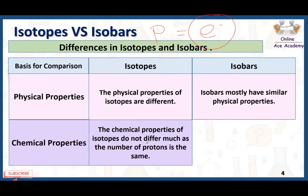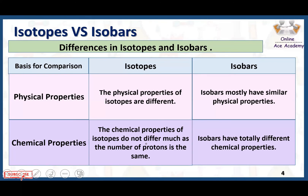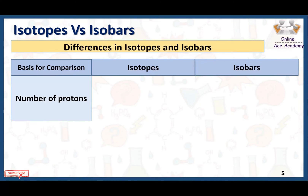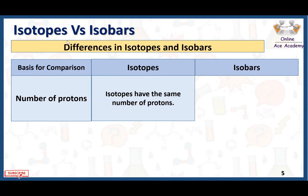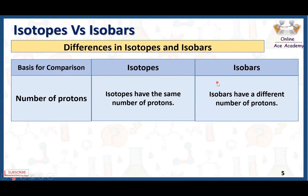For example, shielding effect, electronegativity, and atomic radius remain the same. Isobars, on the other hand, have totally different chemical properties because isobars belong to different elements. Isotopes have the same number of protons because they have the same atomic number. Isobars have different numbers of protons because they belong to different elements — different elements means different number of protons and different atomic number.